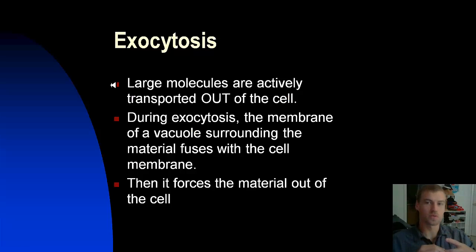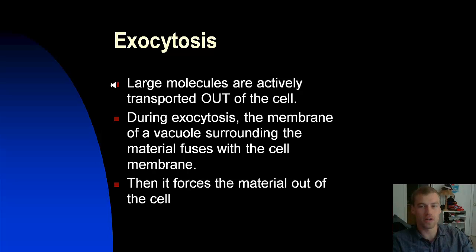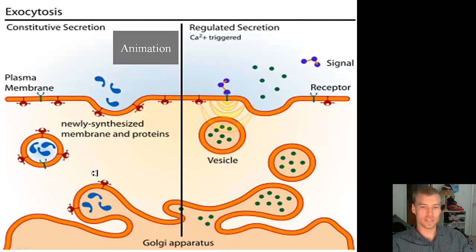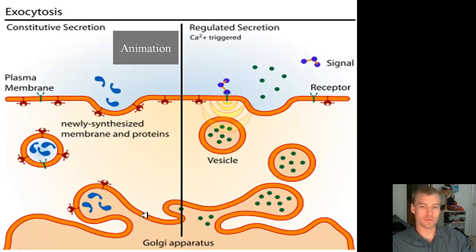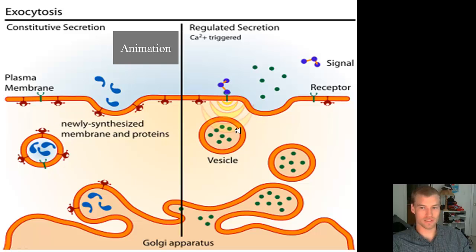Exocytosis is where large molecules are actively transported out of the cell — endocytosis brings it in, exocytosis exits it out. During exocytosis, the membrane of the vacuole or vesicle fuses with the cell membrane and forces the material out of the cell. Here's the Golgi apparatus producing and packaging things sent from the endoplasmic reticulum — smooth or rough ER — and then sending them out into the extracellular material through exocytosis.